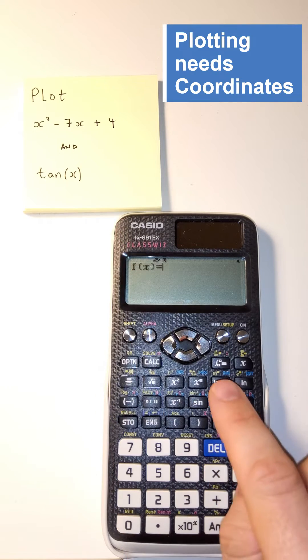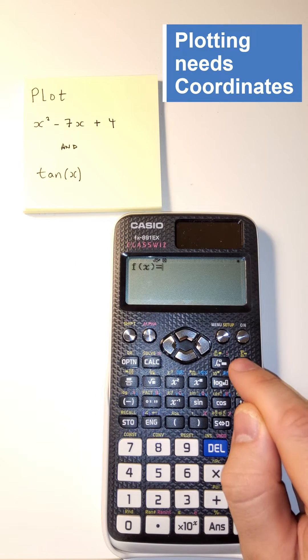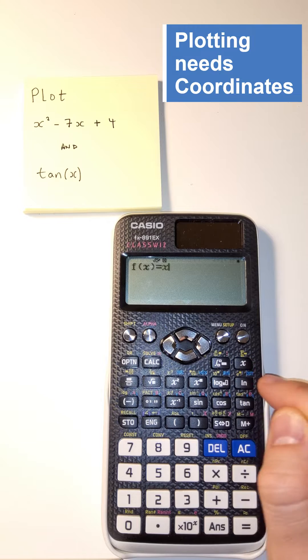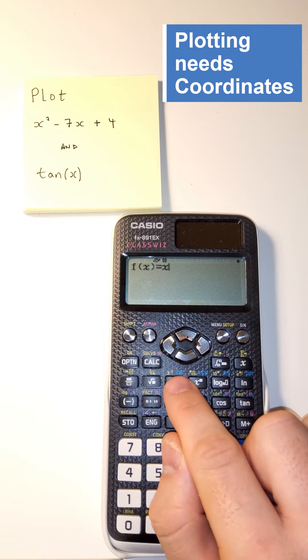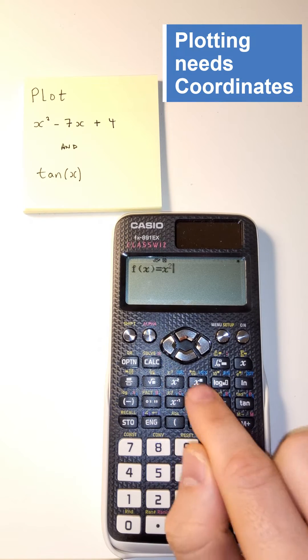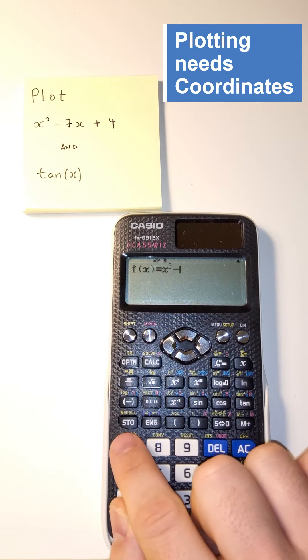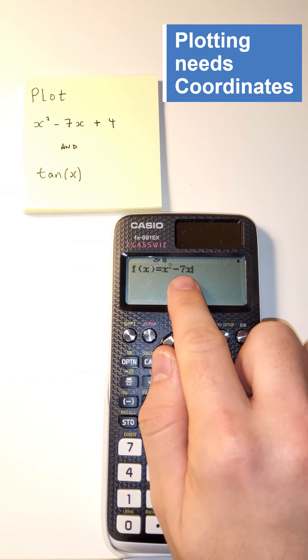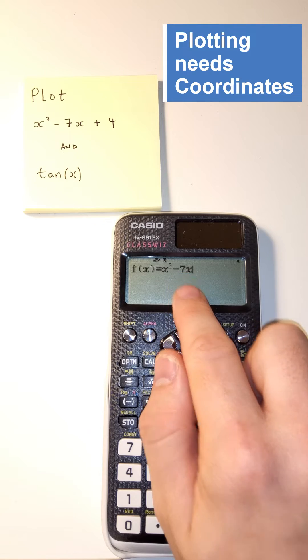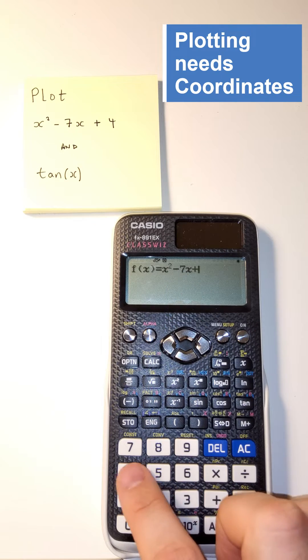So f(x), and to input we use this x up here, so x will be our variable up there. Squared, take away 7x, and just like in real life, you don't need to put the multiply in between those two, it just knows.